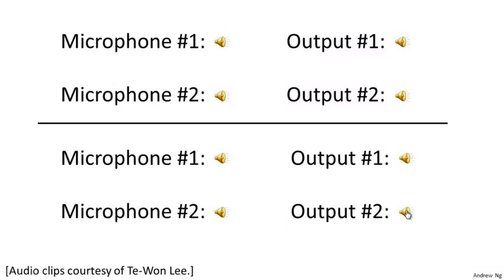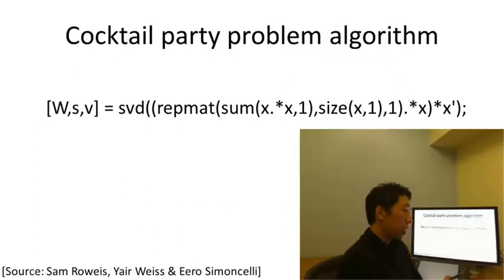You might look at an unsupervised learning algorithm like this and ask how complicated it is to implement. It seems like, in order to build this application and do this audio processing, you'd need to write a ton of code, or maybe link into a bunch of C++ or Java libraries. It seems like a really complicated program. It turns out the algorithm to do what you just heard can be done with one line of code, shown right here.